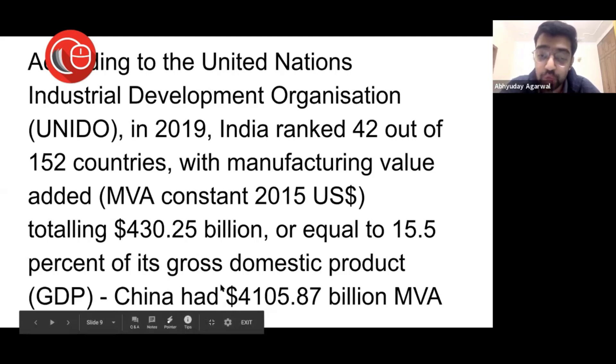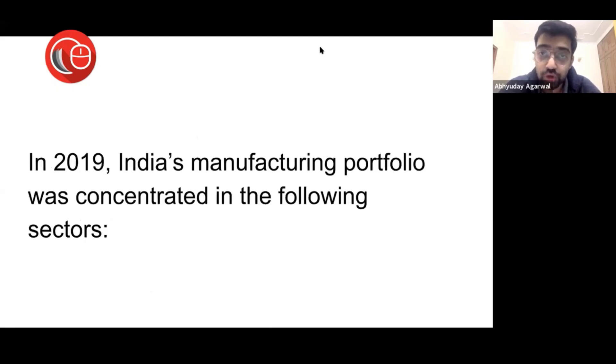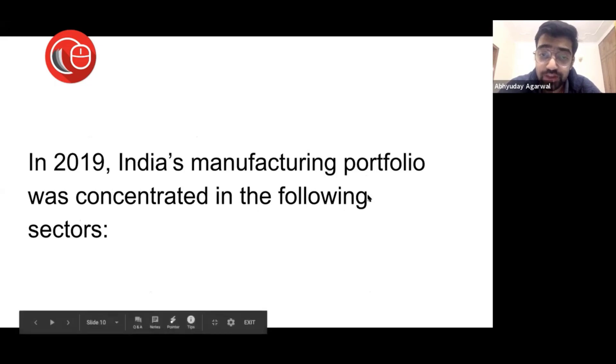The target for India is to get 25% or more of GDP from manufacturing. In 2019, I'm going to do a little bit of comparison so we can understand why this is important now and why manufacturing is picking up.